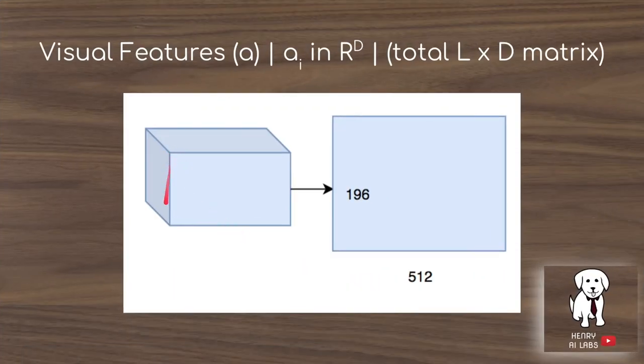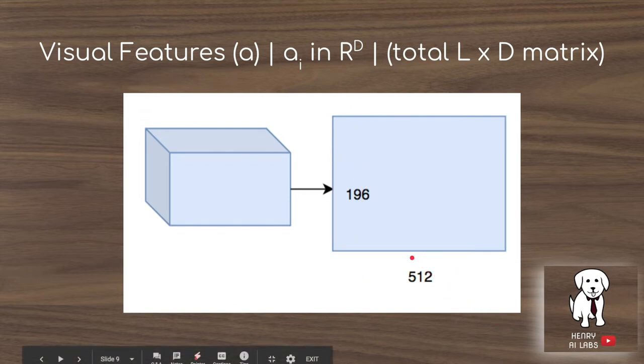The visual features, there are 14 by 14 of these maps. They're going to be flattened out into each one that is 196, 14 times 14. So each feature map is going to make up a vector and it's going to be flattened out into this matrix. So AI in R^D, this isn't really the right R term that they use, but it means that each of these vectors has dimensionality 196.